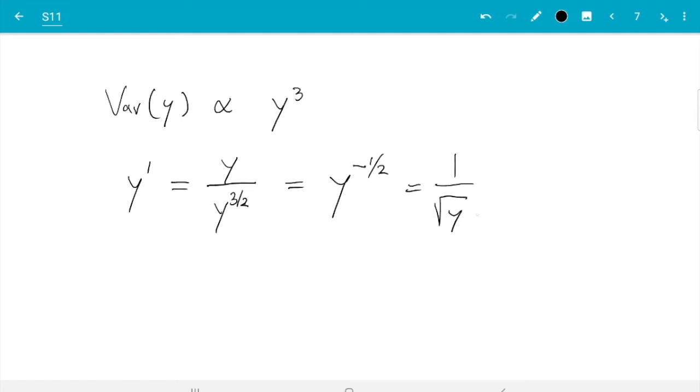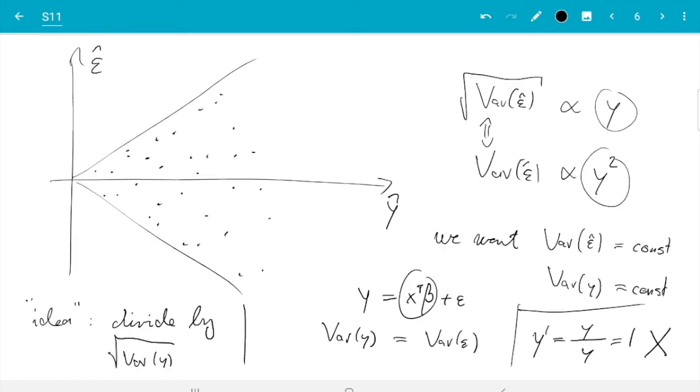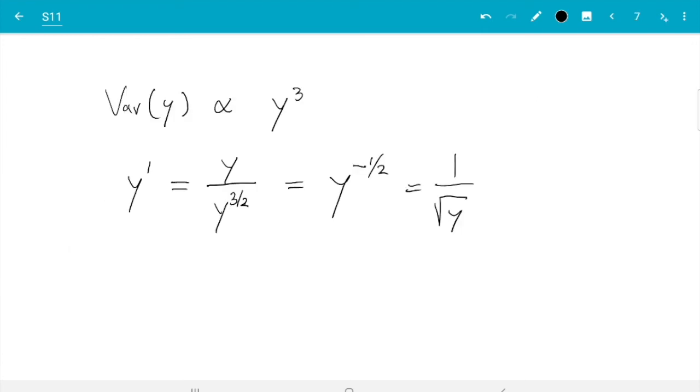Or in simpler notation, 1 over square root of y. And that is fine. We have not lost any information. We have just transformed the y so that hopefully the variance comes out nicely. And I used earlier this argument here, variance of y equals variance of epsilon because they only differ by a constant.